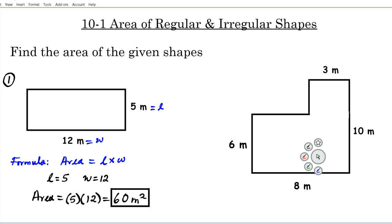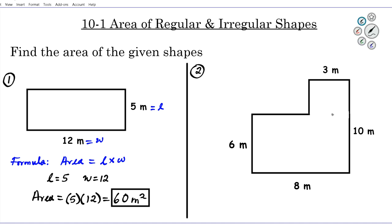Now that we've reviewed finding the area of a rectangle, we'll increase the complexity slightly and look at an irregular shape. Question two — can you name this shape? It's not a square, circle, triangle, or rectangle. It's a composite or irregular shape made up of identifiable shapes. The strategy is to break it down into a combination of regular shapes, using the least number of shapes possible. You can see this L-shaped scenario here.